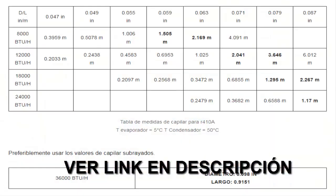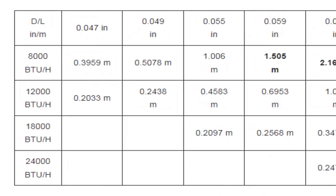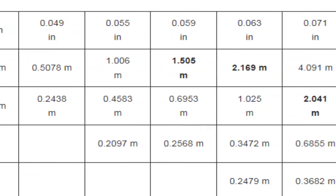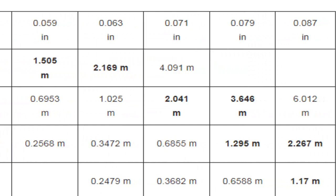In the following tables we have the capillary measurements with diameter in inches and length in meters for the most common cooling capacities in BTUs per hour.